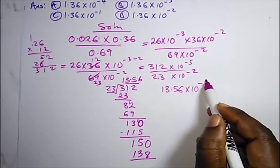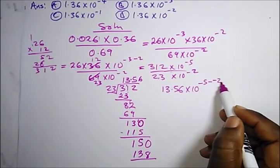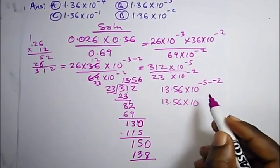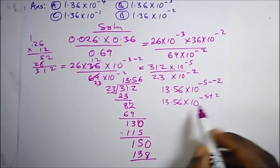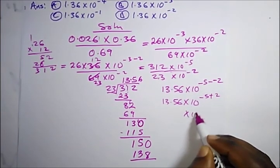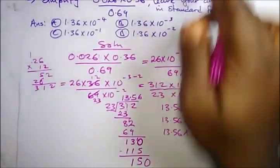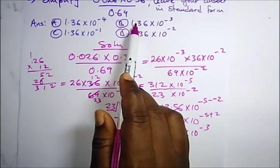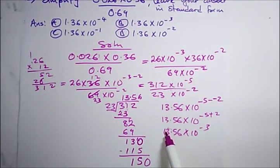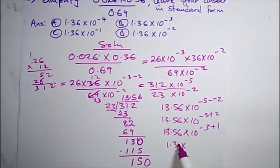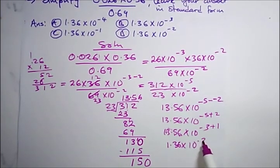We have 13.56 × 10^(−5 − (−2)) = 13.56 × 10^(−5+2) = 13.56 × 10⁻³. To write in proper standard form, shift the decimal one place left, which adds 1 to the exponent, giving us 1.356 × 10⁻², which approximates to 1.36 × 10⁻². The correct option is D.